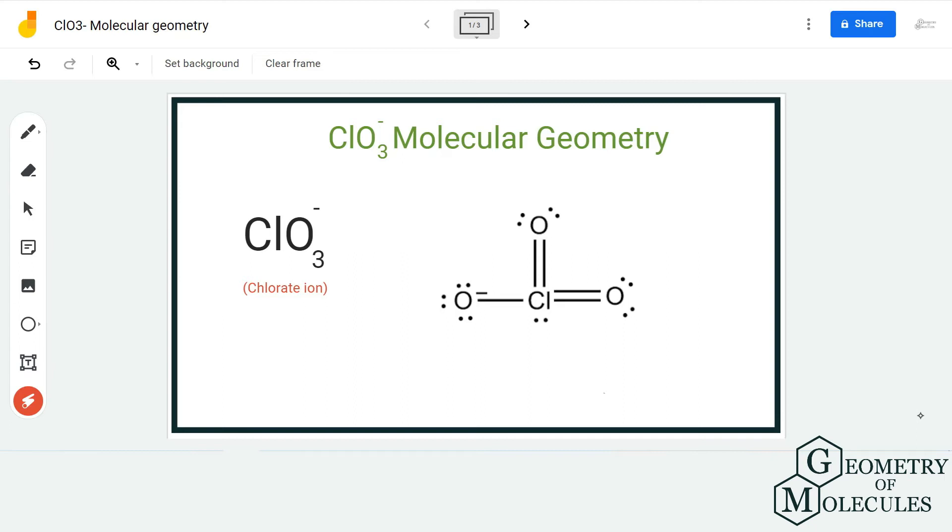Hi guys, welcome back to our channel. In today's video we are going to help you determine the molecular geometry of ClO3 minus ion. It is the chemical formula for chlorate ion, and to determine its molecular geometry we are first going to look at its Lewis structure.